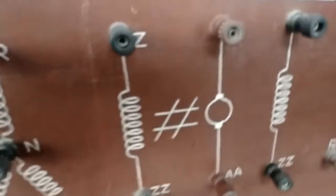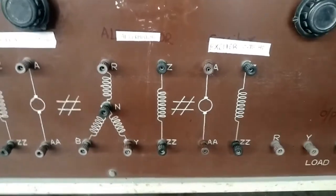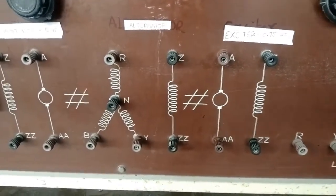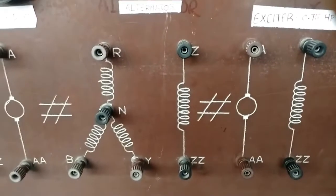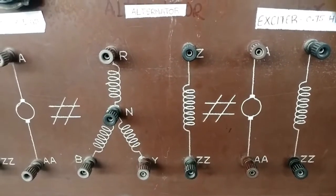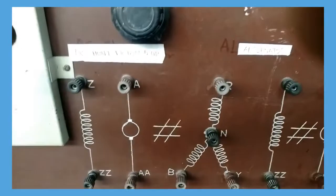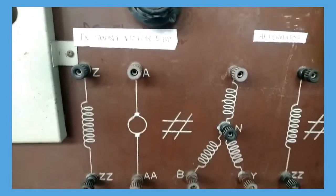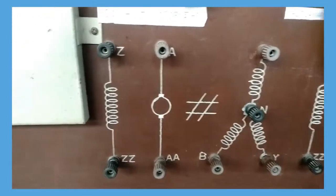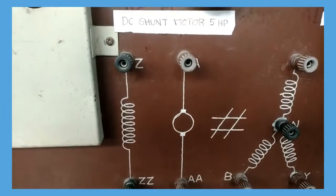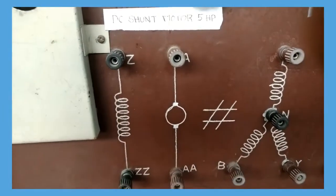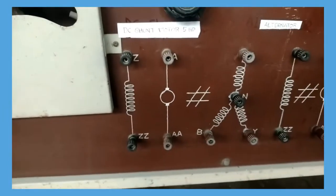Panel board alternator terminals R, Y, B, N field Z — Z connections to the wall. DC shunt motor armature field terminals, connecting wires — ZZ, A, A.